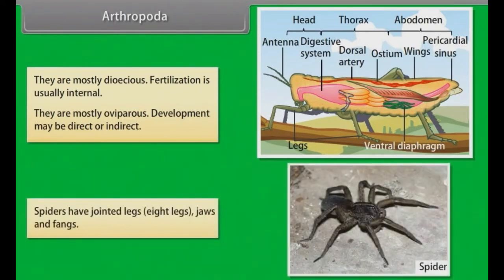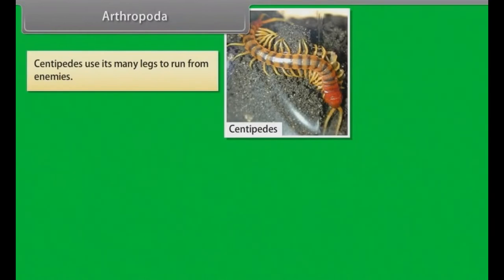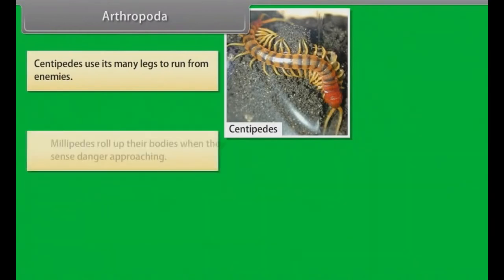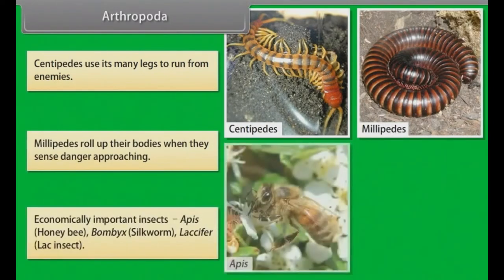Spiders have jointed legs — eight legs — jaws and fangs. Centipedes use their many legs to run from enemies. Millipedes roll up their bodies when they sense danger approaching. Economically important insects include Apis (honeybee), Bombyx (silkworm), and Laccifer (lac insect).